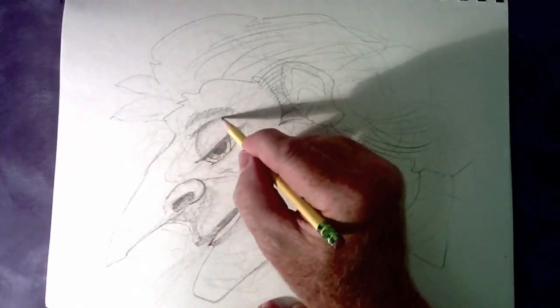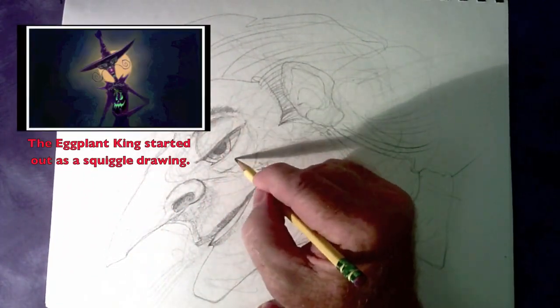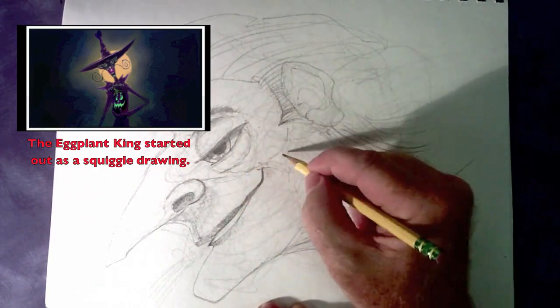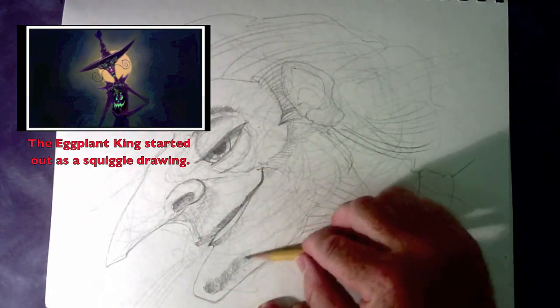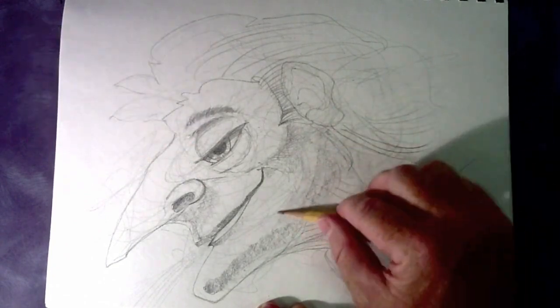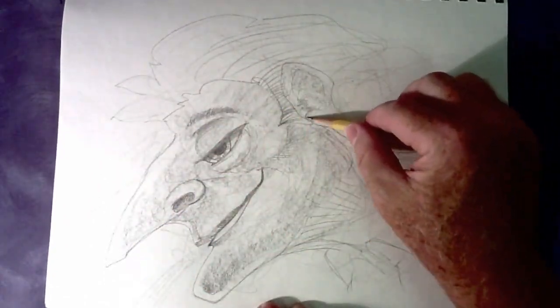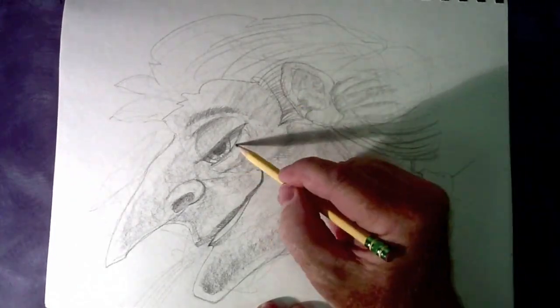So you could do three, maybe four of these in an hour. And then go back and select the one or the ones that you think are best. So you're not trying to make the drawing into something. You're actually just refining it based on the things that you see in that very first quick sketch.